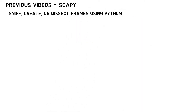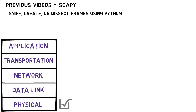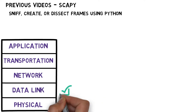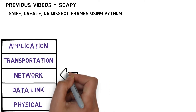Let us now look at our layers model again. As I've said before, we will not focus on the first layer in this course. We've already covered the second layer, so now it's time to proceed to the third layer, that is, the network layer.